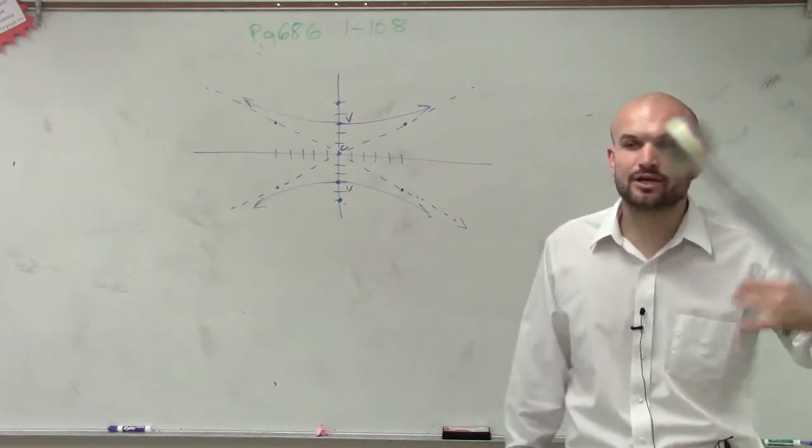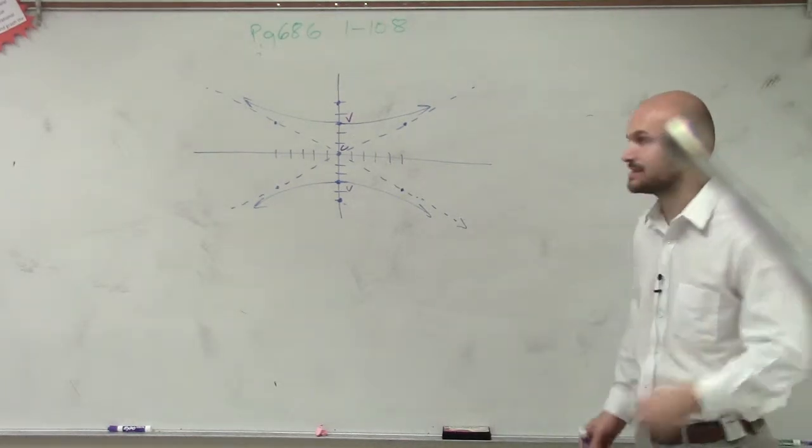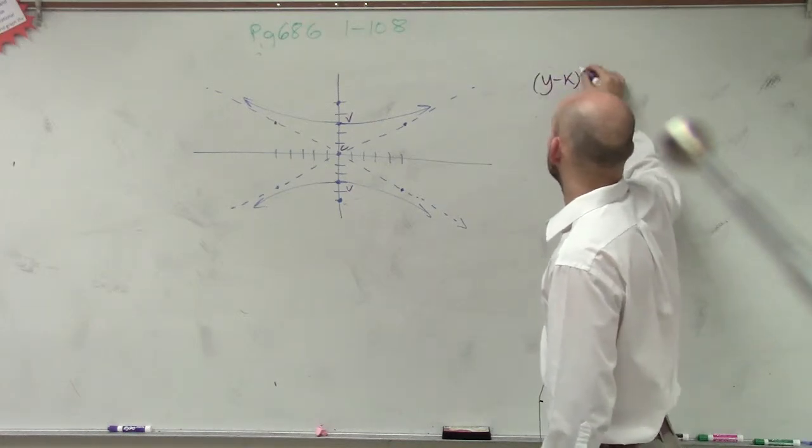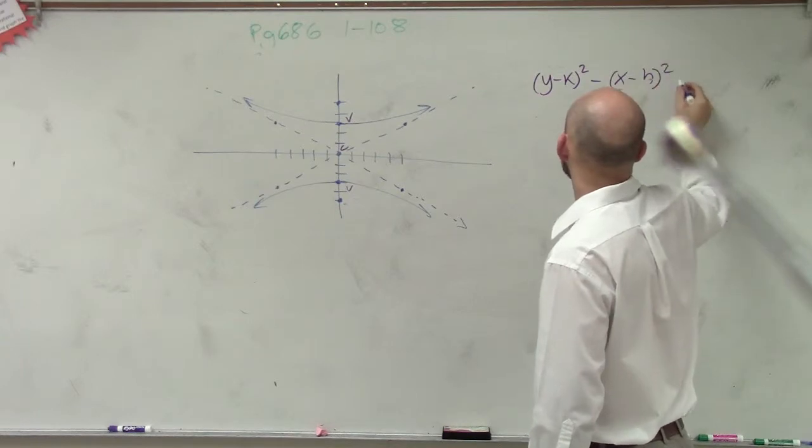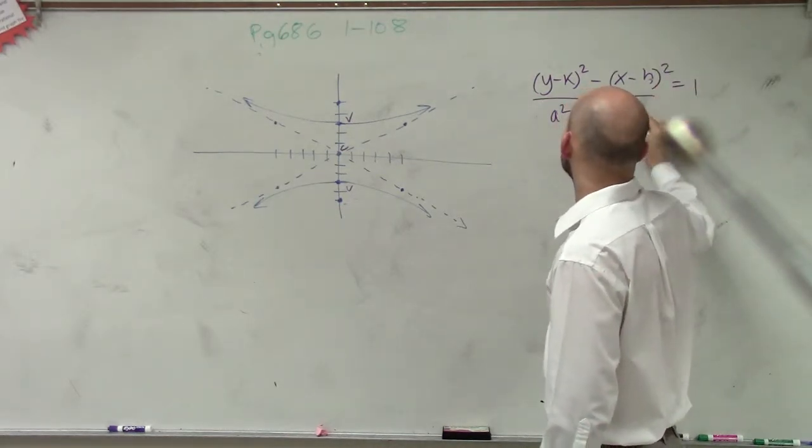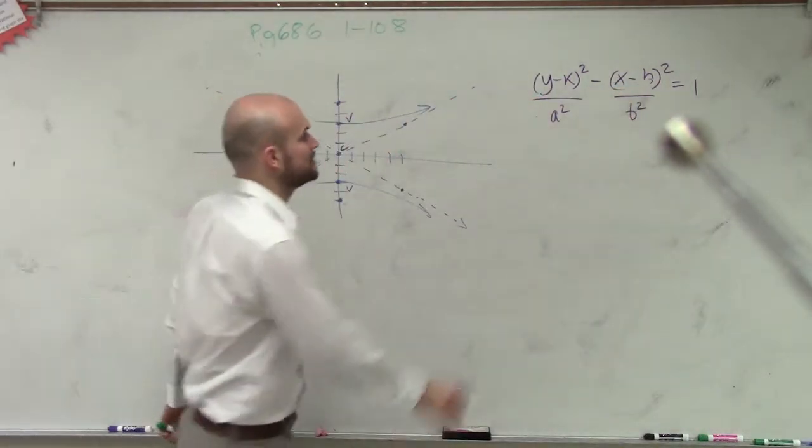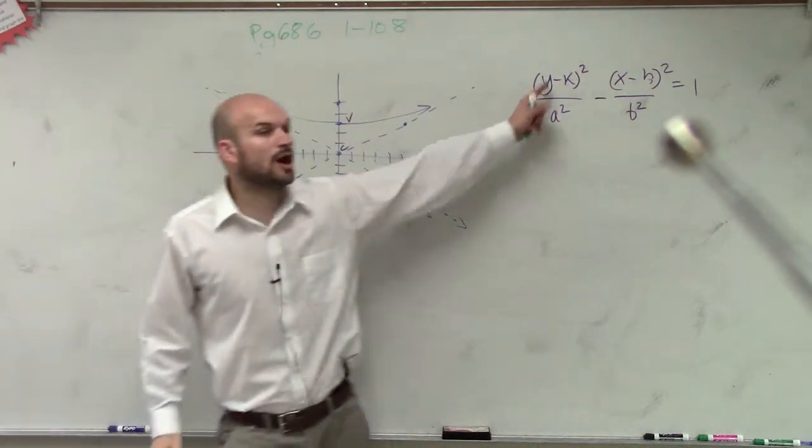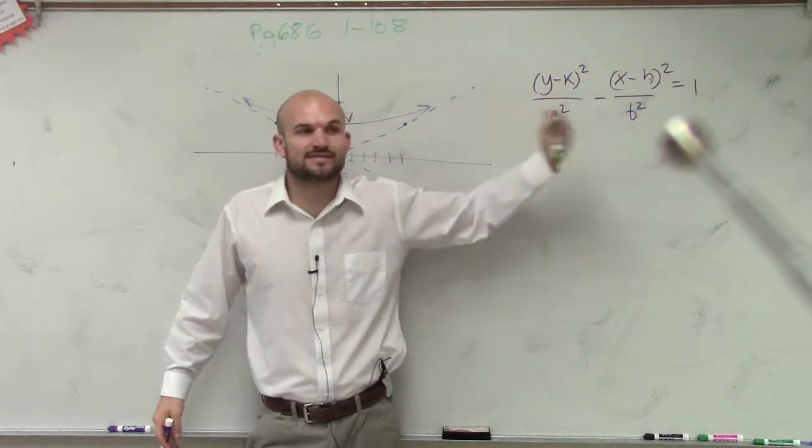So therefore, we need to remember what is the equation for a hyperbola that has a vertical transverse axis. So the equation, remember, is (y - k)² over a² minus (x - h)² over b² equals 1. And remember, hyperbolas was always a² minus b², right? These two are subtracted.